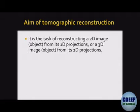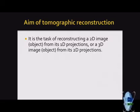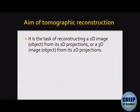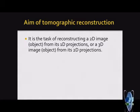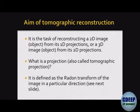Tomographic reconstruction is the task of reconstructing a 2D image or object from its 1D projections, or a 3D image from its 2D projections. For pure mathematics it is reconstructing an (n+1)-dimensional object from its n-dimensional projections, but in image processing and signal processing we care only for n equal to 1 or 2.